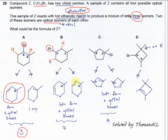After elimination, both products each have one chiral center, so each will form two isomers. That gives four total — two from one product and two from the other. Since we need exactly three isomers, option B is wrong.